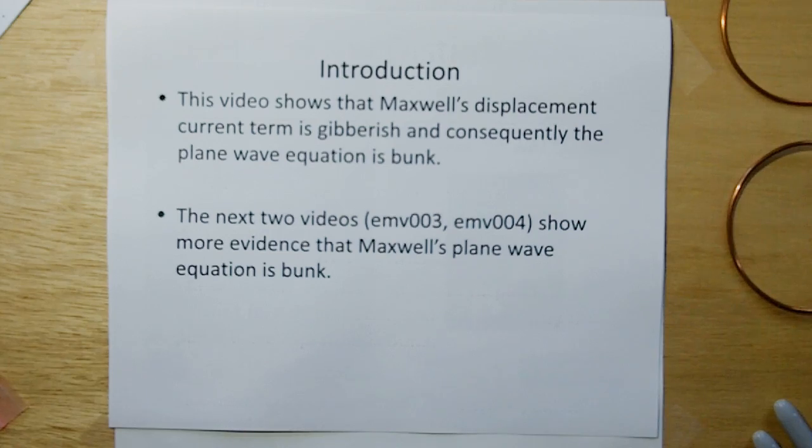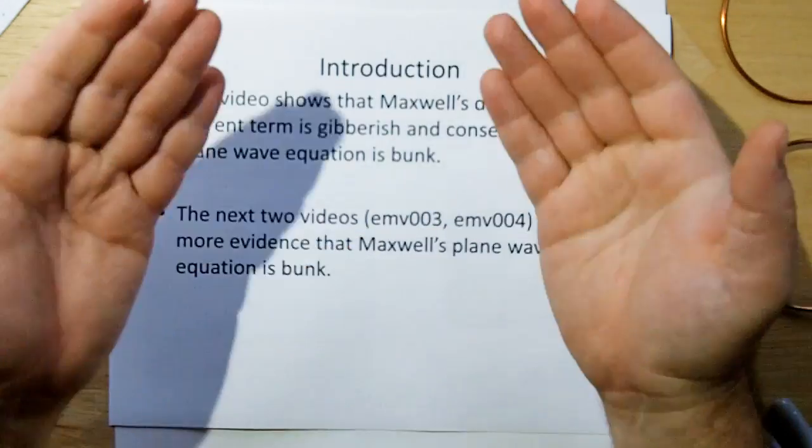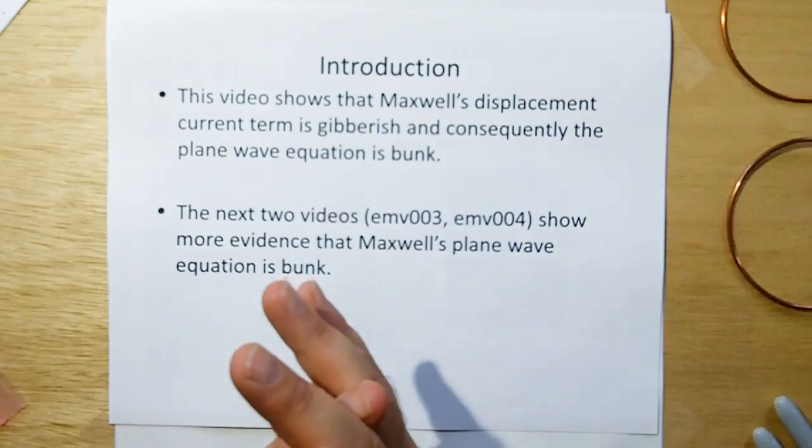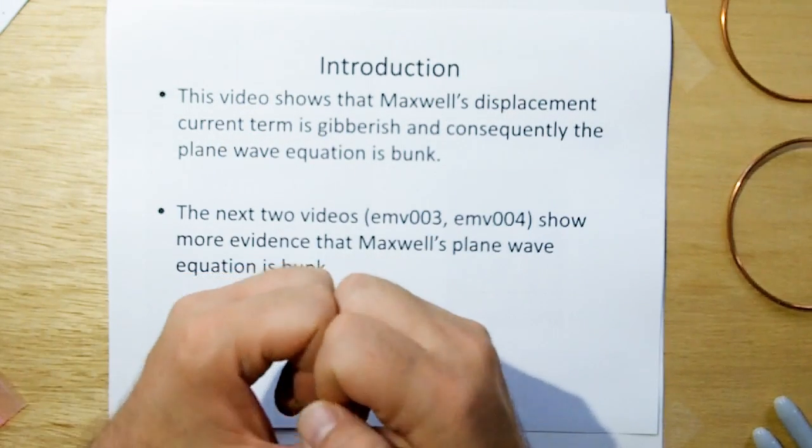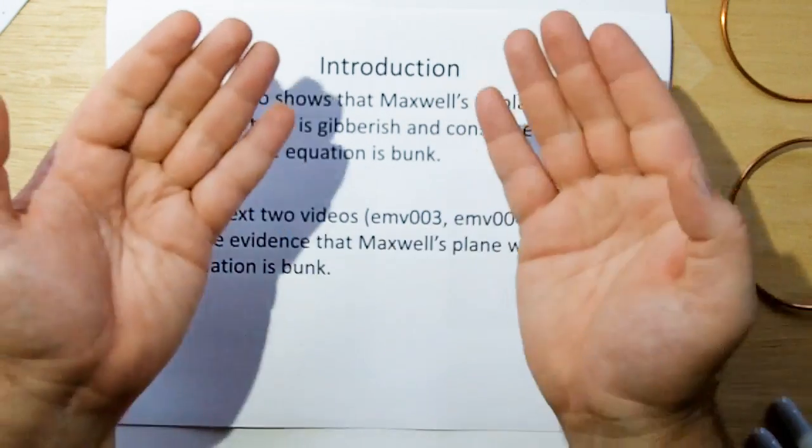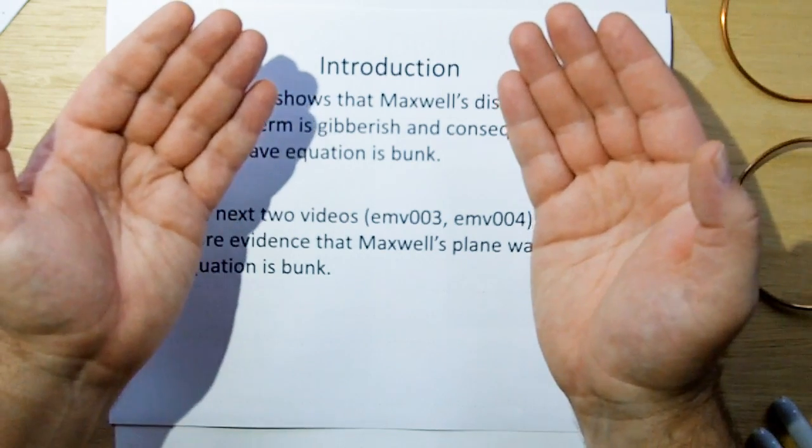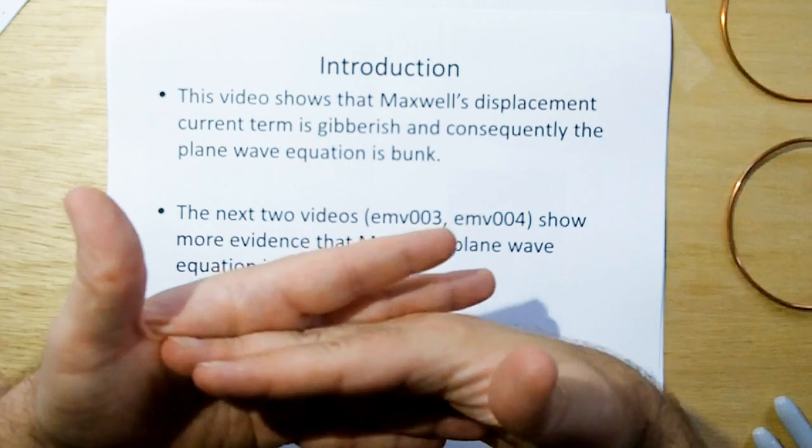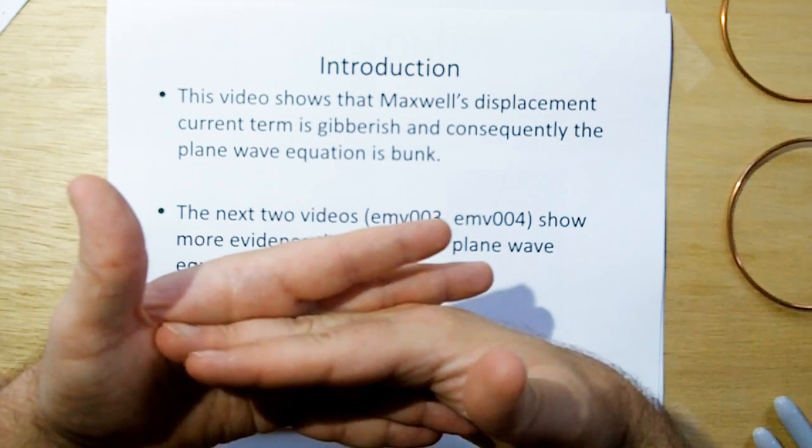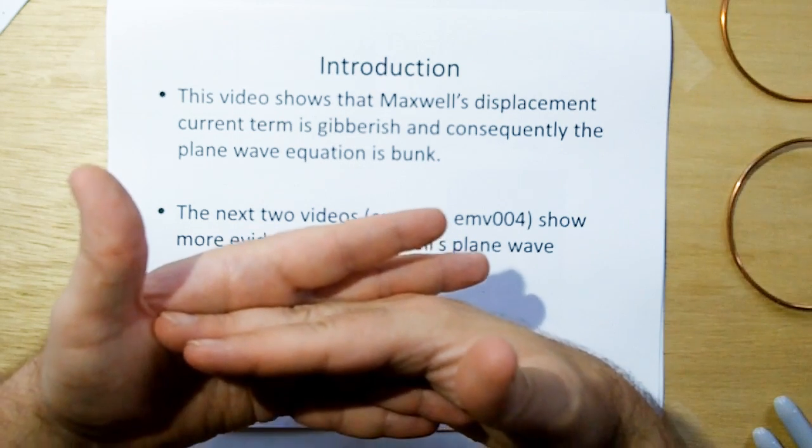This is a redo of a previous version of this video. Through discussions with people on the YouTube site, I'm making this video again. In re-looking at it, I realized that the two independent things I came up with, the over-unity and the dipole experiment, I can put them together and it dovetails to a much more powerful argument that Maxwell's plane wave derivation is complete garbage.